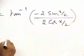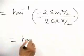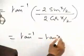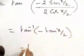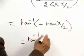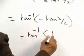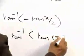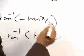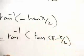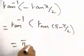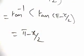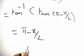And that is equal to tan inverse of tan x by 2, and this is equal to tan inverse of tan pi minus x by 2, which equals pi minus x by 2. That is choice 4, the correct answer.